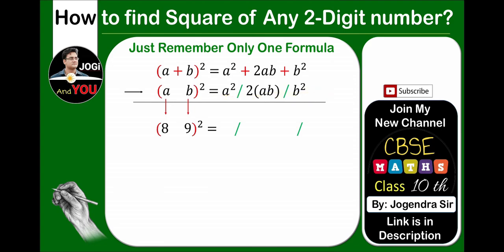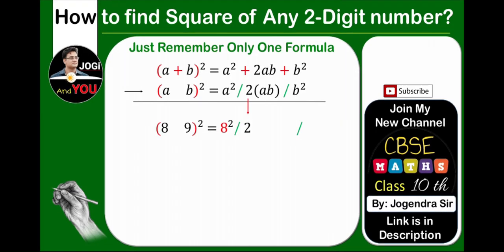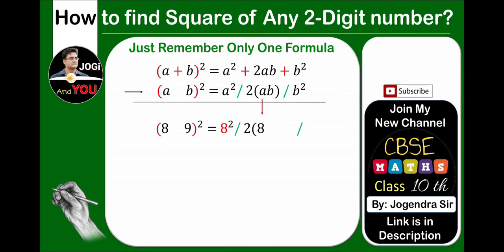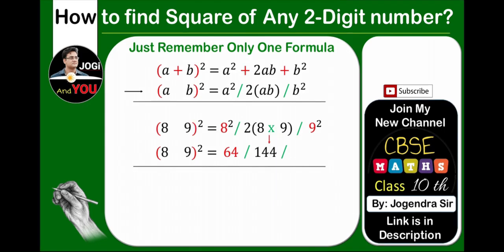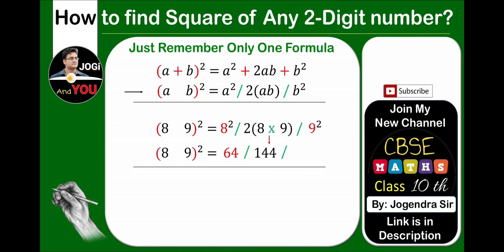According to this formula, we have to place 8 as A and 9 as B. So, A² means 8², 2AB, and B² means 9². Now, 8² means 64, 2 × 8 × 9 equals 144, and the last digit 9² means 81.